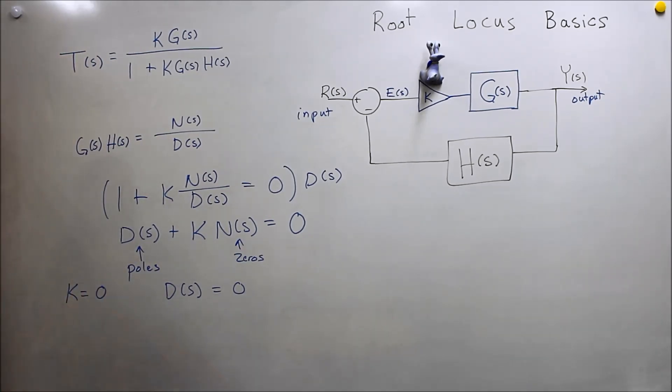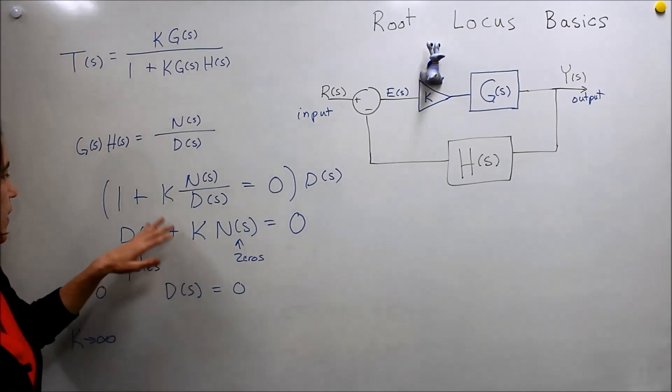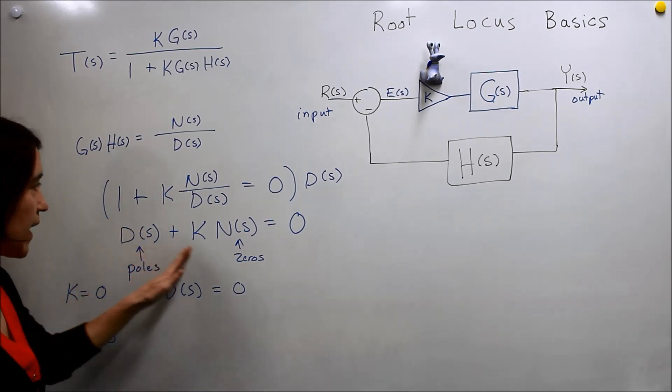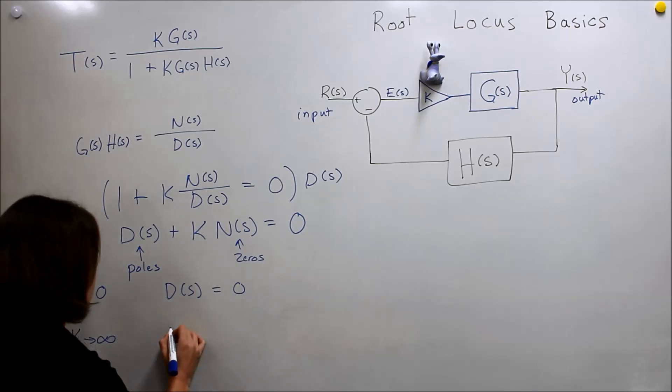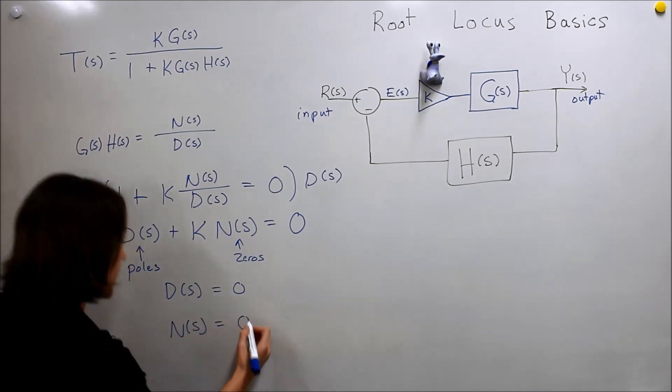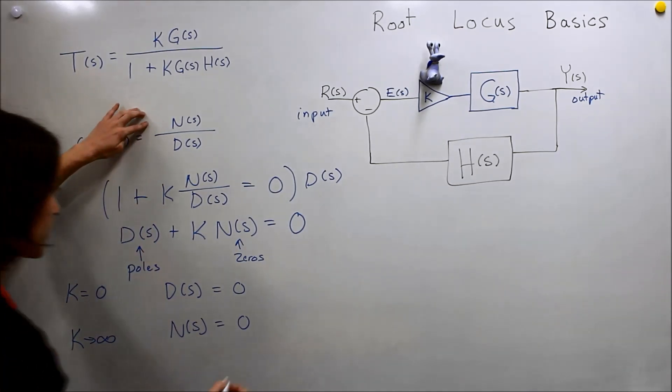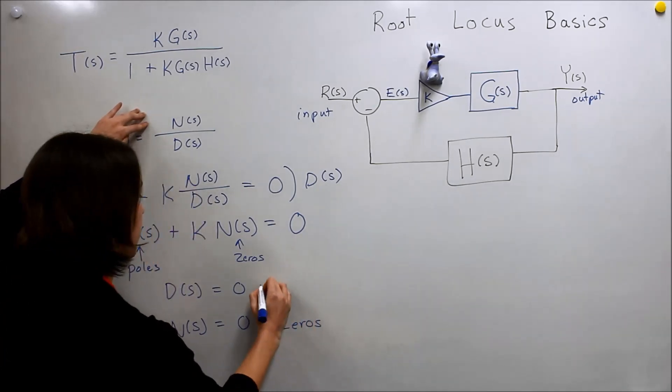Then, let's take the other extreme. If K goes to infinity, these are essentially going to be completely ignored, and K dominates and all we have is N of S is going to be equal to zero. And this is the numerator, so these are the zeros. These are the zeros, and these are the poles.